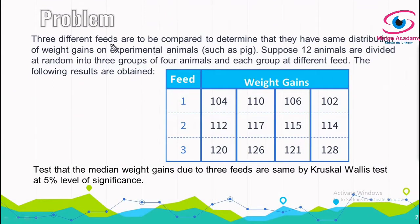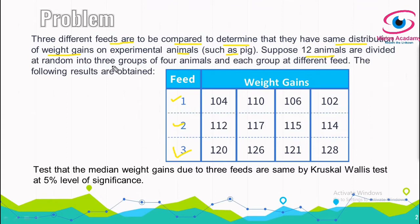We have three different feeds that are to be compared to determine whether they have the same distribution of weight gains on experimental animals such as pigs. We have three kinds of feeds: feed 1, feed 2, and feed 3. We need to compare these three feeds to know whether they have the same weight gains. Twelve animals are divided at random into three groups — feed 1, feed 2, feed 3 — with four animals each.